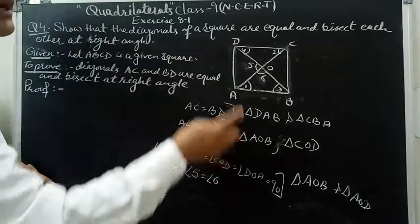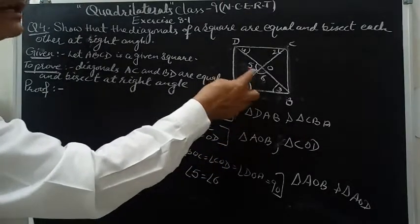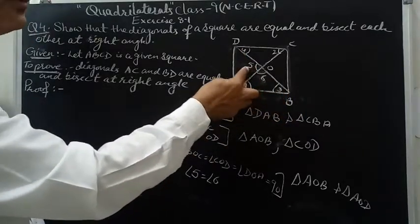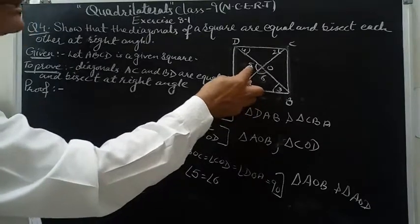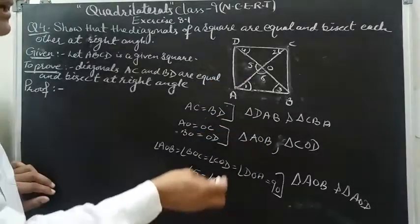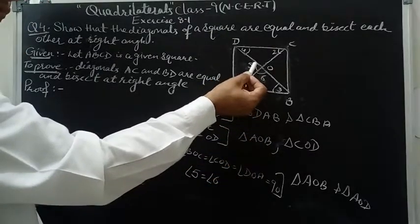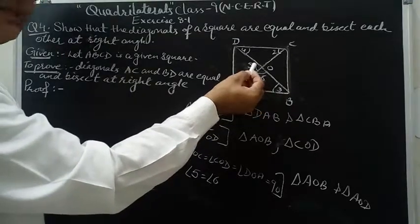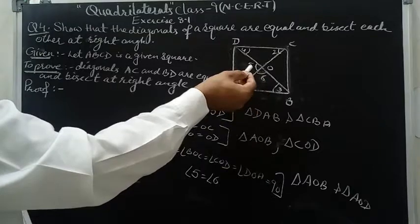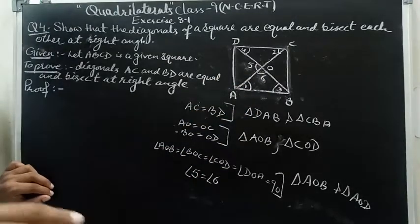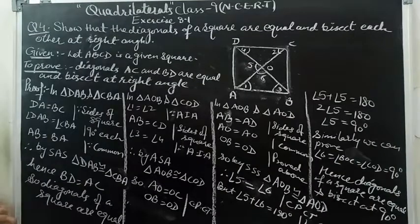Since triangles AOB and AOD are congruent, angle 5 equals angle 6 by CPCT. These two angles form a linear pair, so angle 5 plus angle 6 equals 180 degrees. Since they are equal, 2 times angle 5 equals 180 degrees, therefore angle 5 equals 90 degrees. Similarly, all four angles at O are 90 degrees. Hence the diagonals bisect each other at right angles.